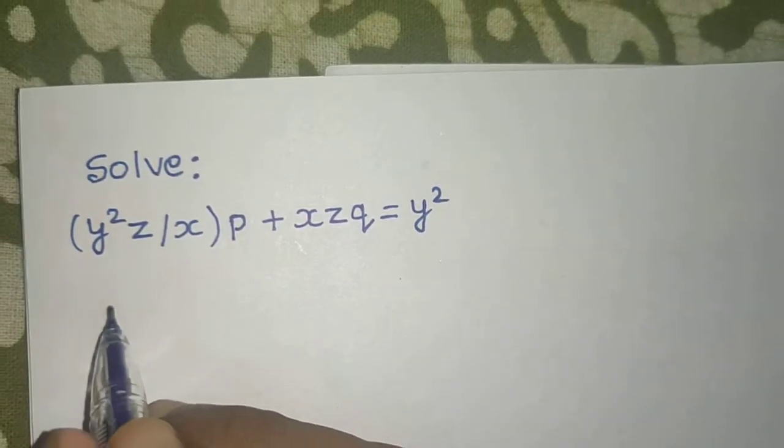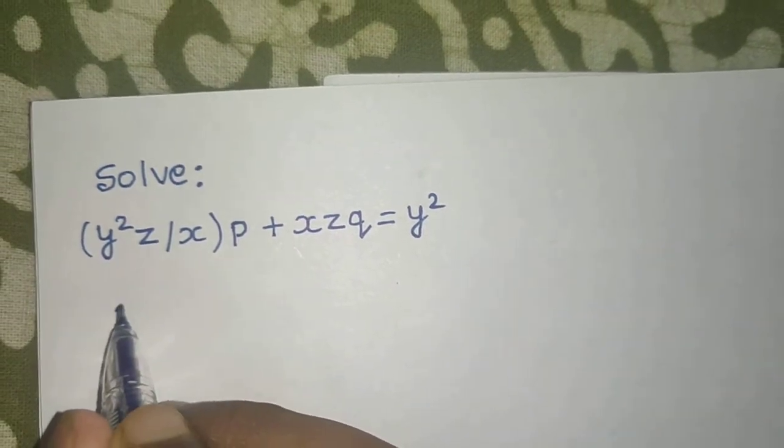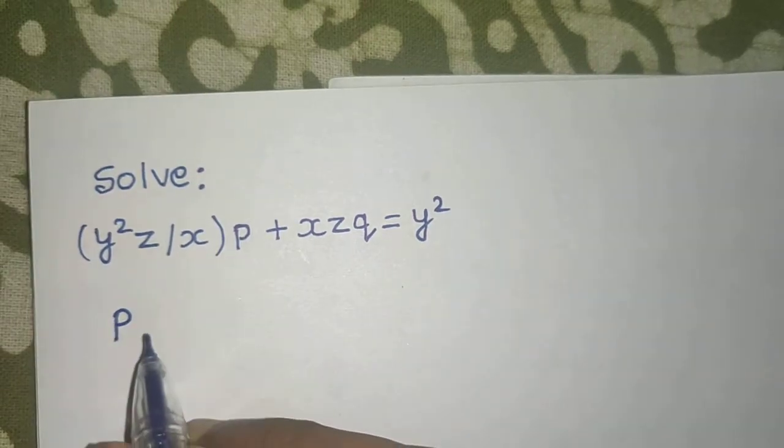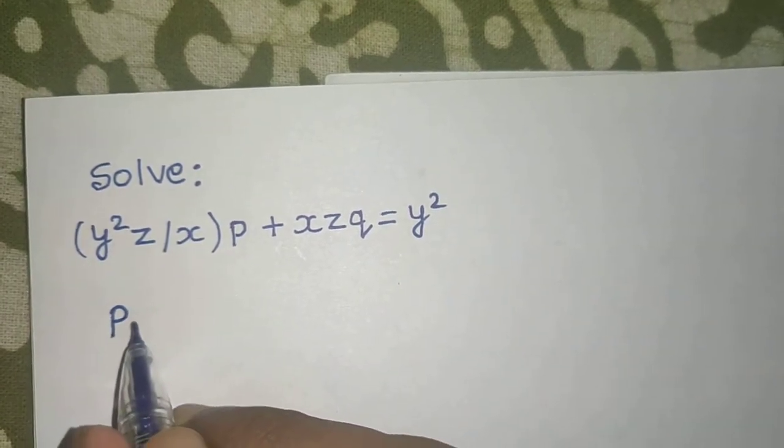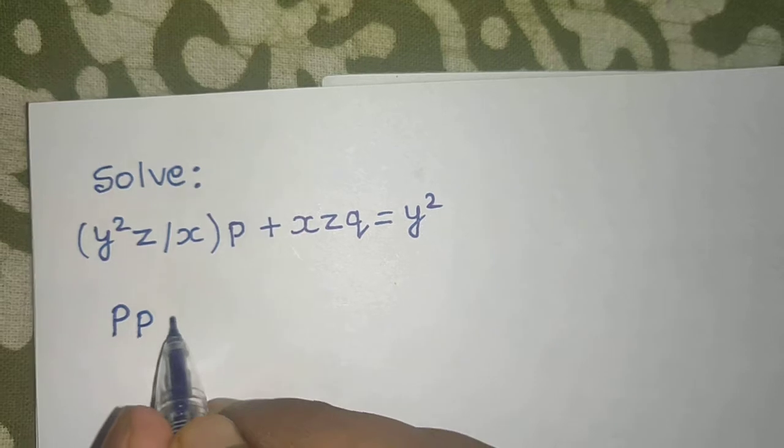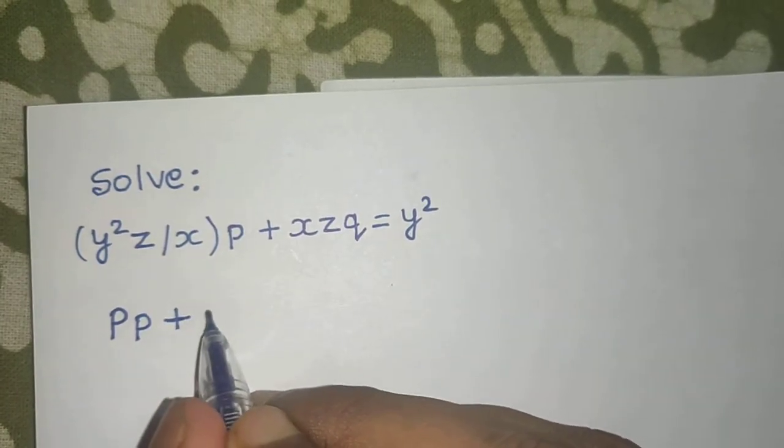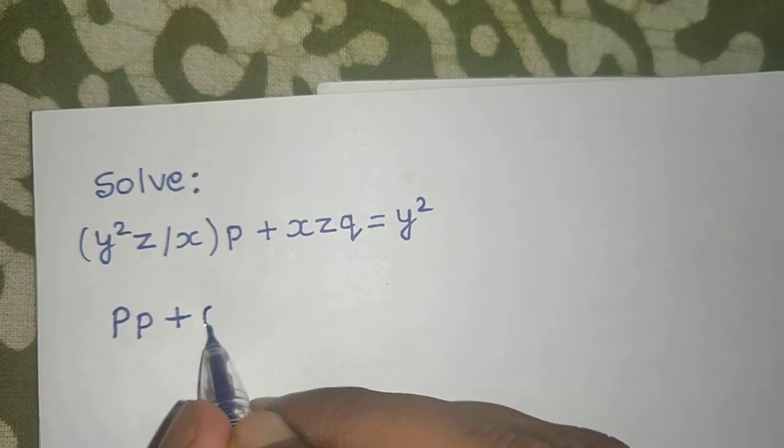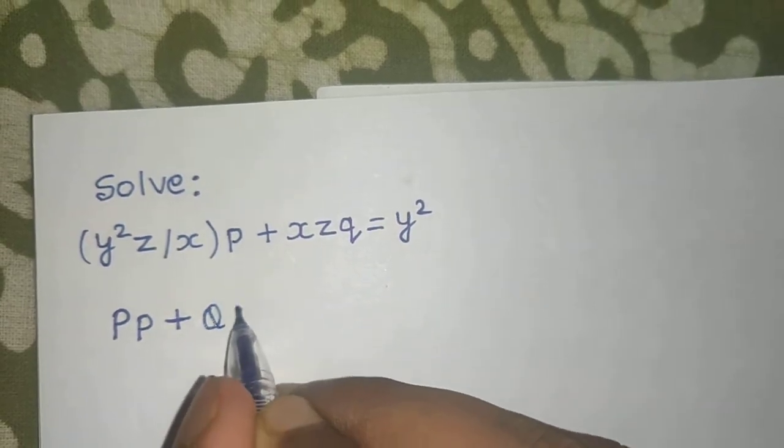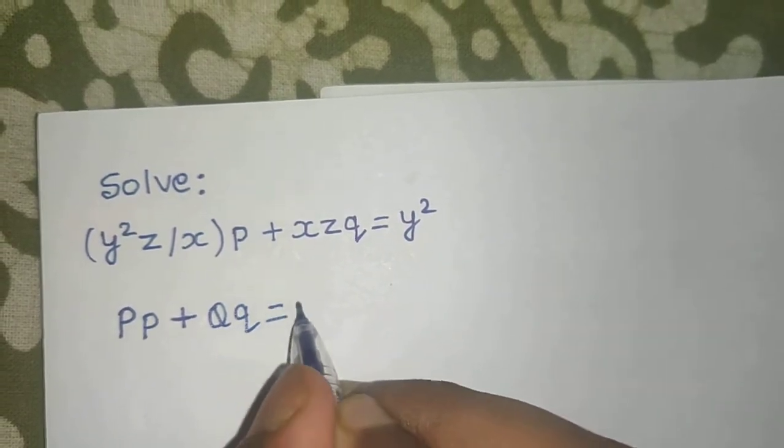Because the basic format is P, capital P into small p plus capital Q into small q equals to R. This is the basic format.